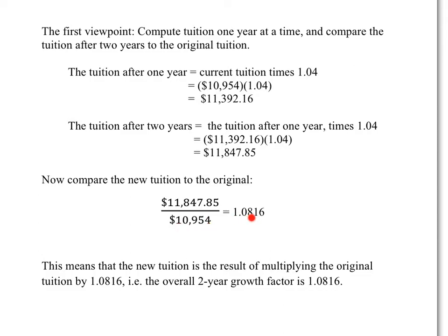It's 1.0816 times greater. In other words, the new tuition can be written as 1.0816 times the original tuition. If you multiplied both sides right here by $10,954, you would have $11,847.85 equals the old tuition, $10,954, times this factor of 1.0816.